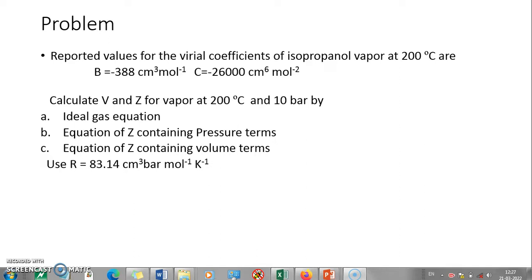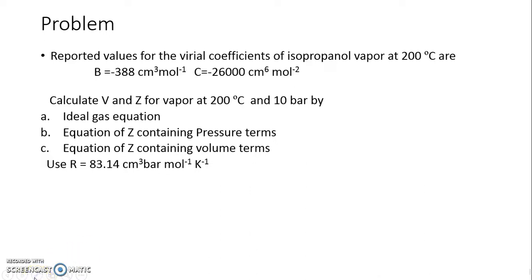In the data statement they have provided us with the value of B and C. However, B and C values in general we need to find from the literature or calculate using certain generalized rules. The first portion here is calculation using ideal gas equation of state. What you just need to do is V equals RT by P and you get the value of V, and Z is 1 for an ideal case.